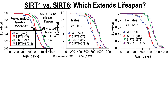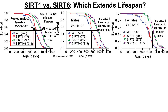This pooled data is for males and females combined. When examined separately, the SIRT6 lifespan extension effect is found in both males and females — average and maximal lifespan were increased in both sexes. Notably, the purple curves where both SIRT1 and SIRT6 are overexpressed did not extend lifespan longer than SIRT6 alone, suggesting that having higher SIRT1 and SIRT6 is not additive and that higher SIRT6 alone drives the lifespan-extending effect.